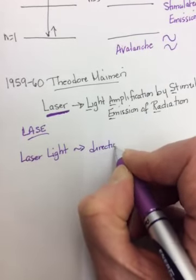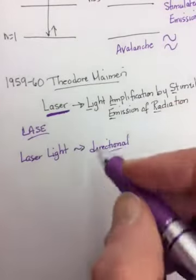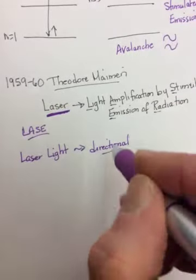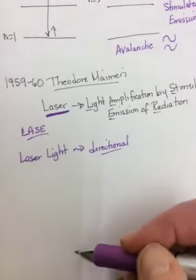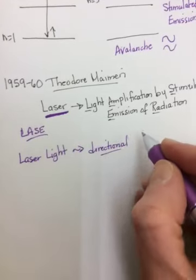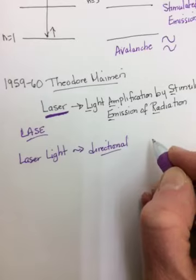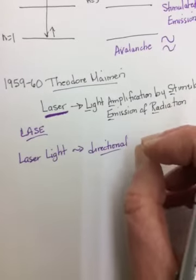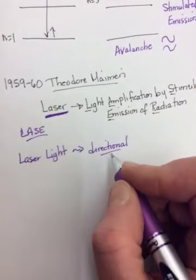And what that means is the beam doesn't spread out. If you have a flashlight beam and you shine it on the back wall, when it gets to the back wall, it's a big spot of light. And the further away the back wall is, the bigger the spot of light is. But that's not true for a laser beam. It starts out as a tiny beam and it stays as a tiny beam as it travels. So that when it hits the back, it's still that pinpoint. It doesn't spread out. So it's directional.